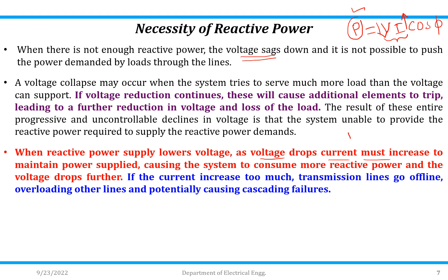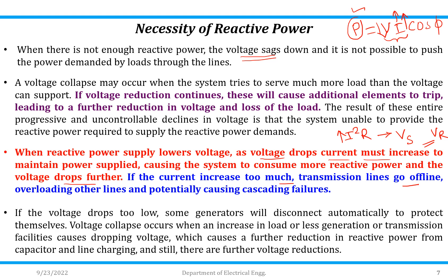Since losses are denoted by I²R, if current increases then losses also increase. As losses increase, there will be a difference between the sending-end voltage and the receiving-end voltage, further leading to voltage drop. If the current increase is too much, transmission lines go offline, overloading other lines and potentially causing cascading failure. Some generators will disconnect automatically to protect themselves if the voltage drop is too low. Voltage collapse occurs when an increase in load or less generation or transmission capacity causes dropping voltage, which causes further reduction in reactive power from capacitors and line charging, resulting in still further voltage reductions.